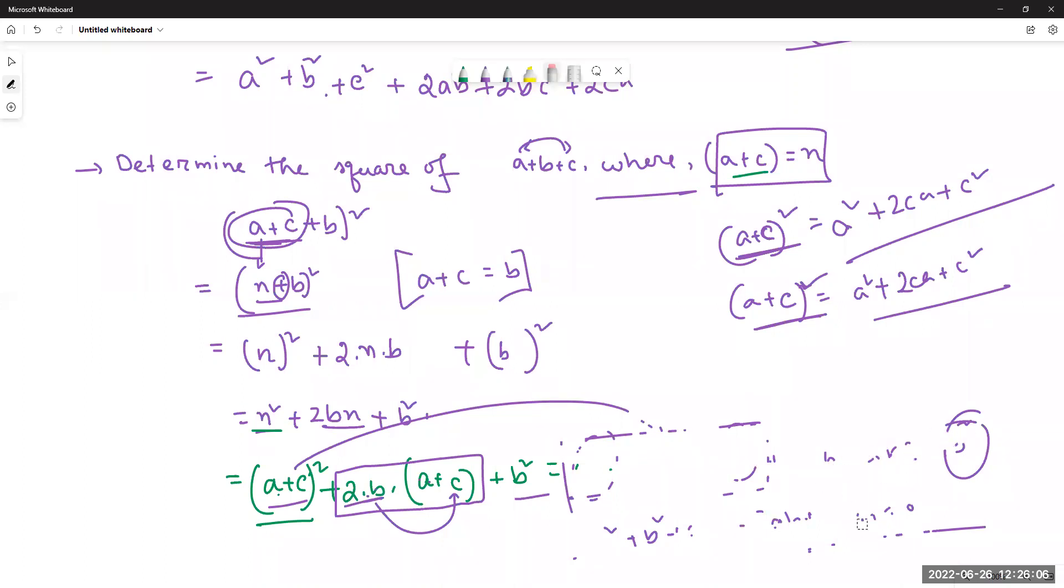What is the question? I said 2b, then a plus c is whole square, then plus 2b. What is the whole square? What is the whole square?